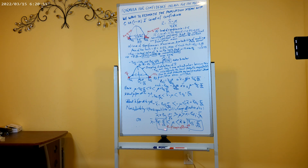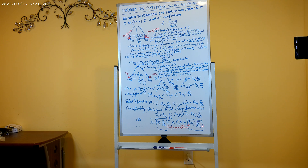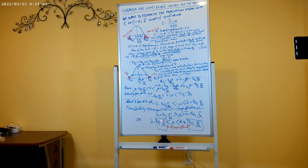Rearranging with the lower boundary on the left, the confidence interval for the population mean is: x-bar minus Z_α/2 · (sigma/√n) < mu < x-bar plus Z_α/2 · (sigma/√n). The term Z_α/2 multiplied by sigma over root n is called the margin of error. Z_α/2 is the critical value, and sigma over root n is the standard error of the sampling distribution.